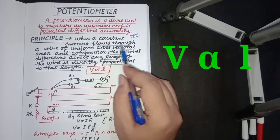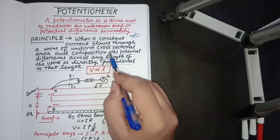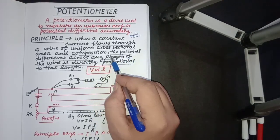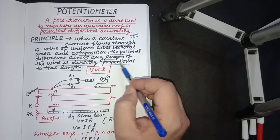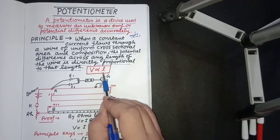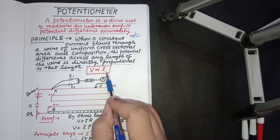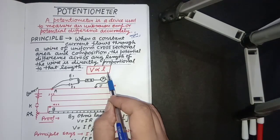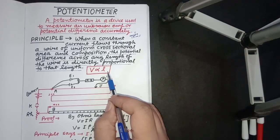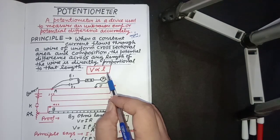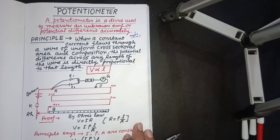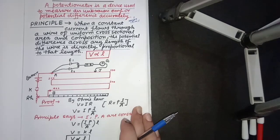is directly proportional to that length. V is proportional to L. So this is the principle and formula that can be used in applications, which we will study in the next videos.